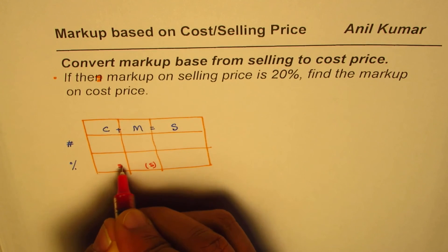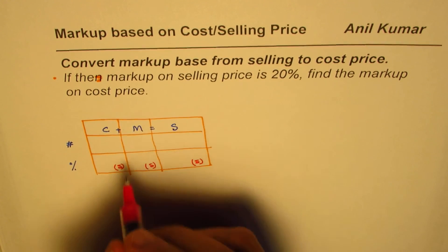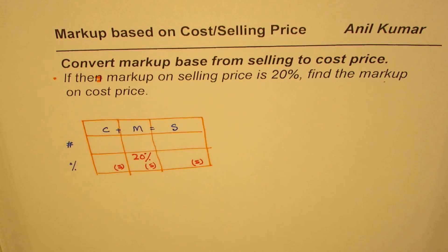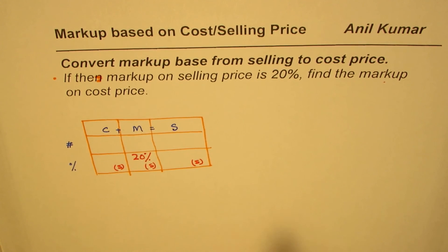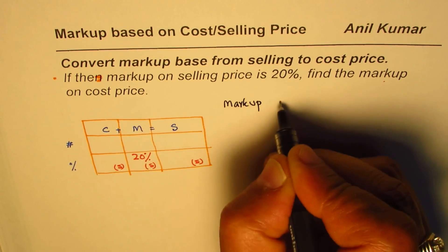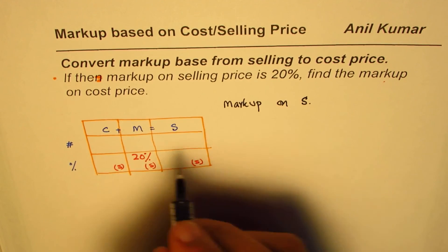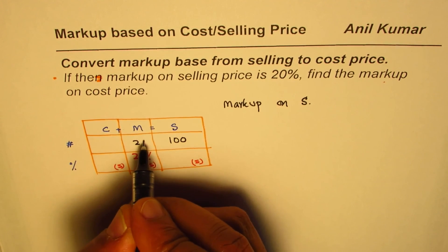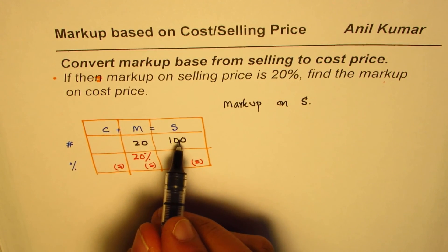Since selling price is the base, markup on selling price is 20%. We need to find the markup on cost price. Since very limited information is given, it's good to assume some values. We have markup on sales, so we'll take sales as $100. Since markup is 20% of sales, markup will be $20.